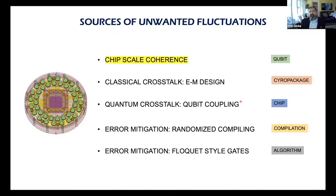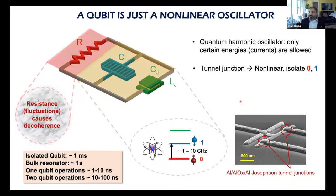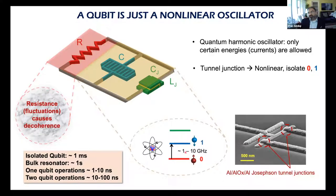At a very basic level, a superconducting qubit is an oscillator. Electrical oscillators have inductors and capacitors. Here we typically use a Josephson tunnel junction which gives a nonlinear inductance, forming a nonlinear oscillator. Like any potential well in quantum mechanics, this gets quantized into discrete levels. The frequency range is typically 1–10 GHz. Shown is an SEM image of a tunnel junction at 500 nm scale — the technology is aluminum/aluminum-oxide/aluminum tunnel junctions.